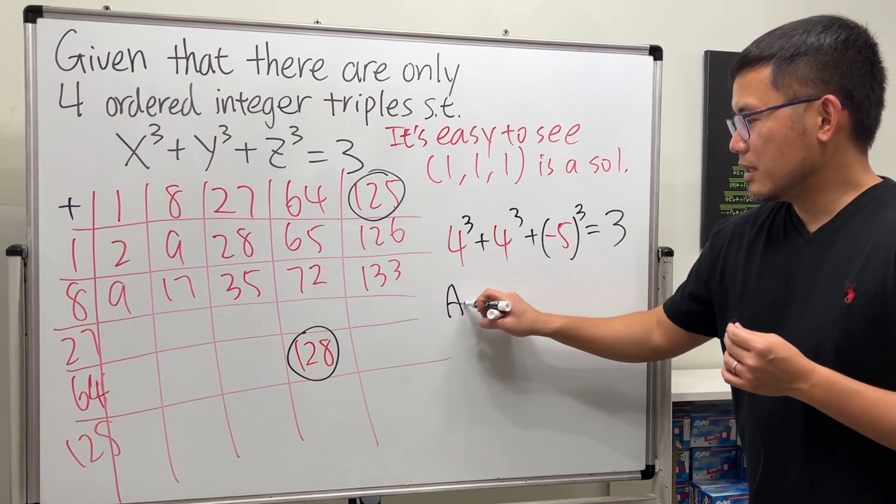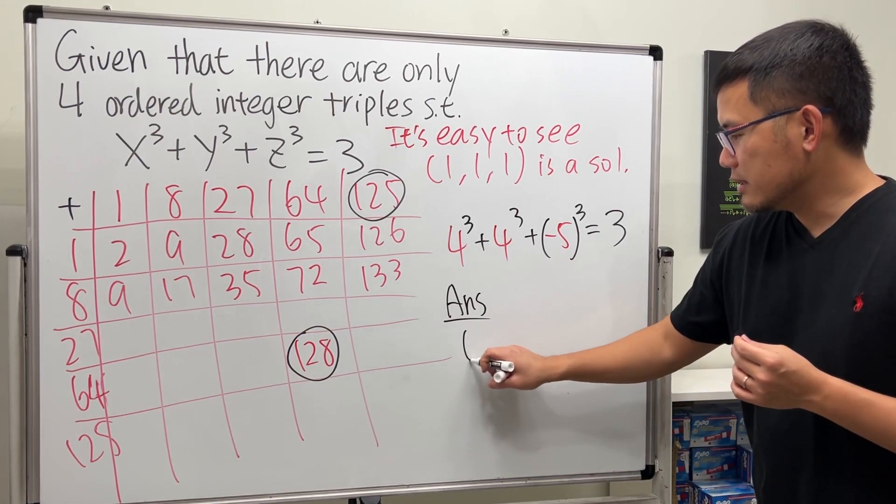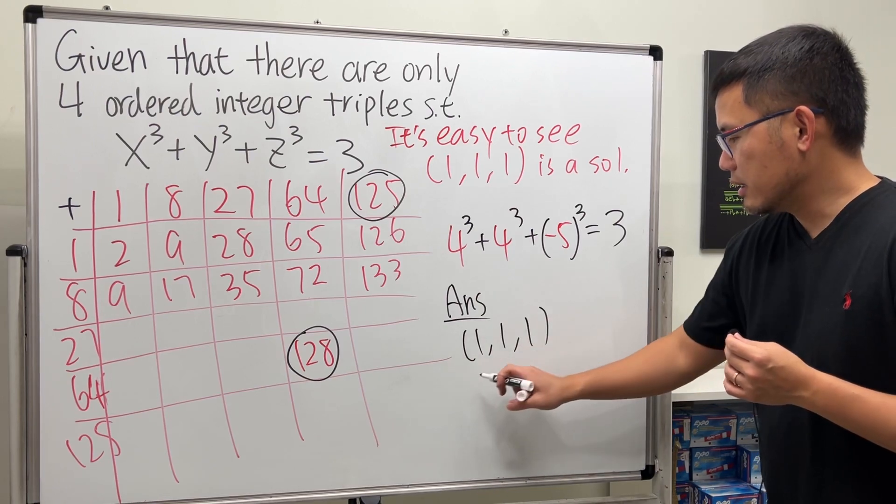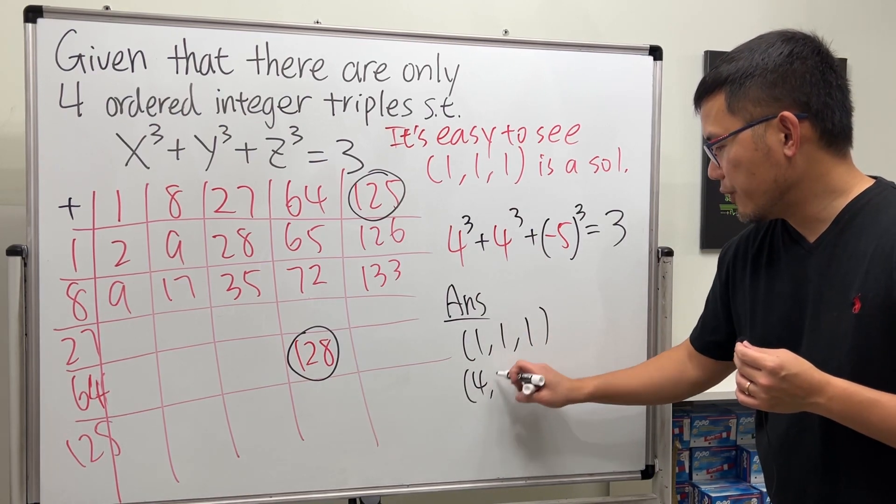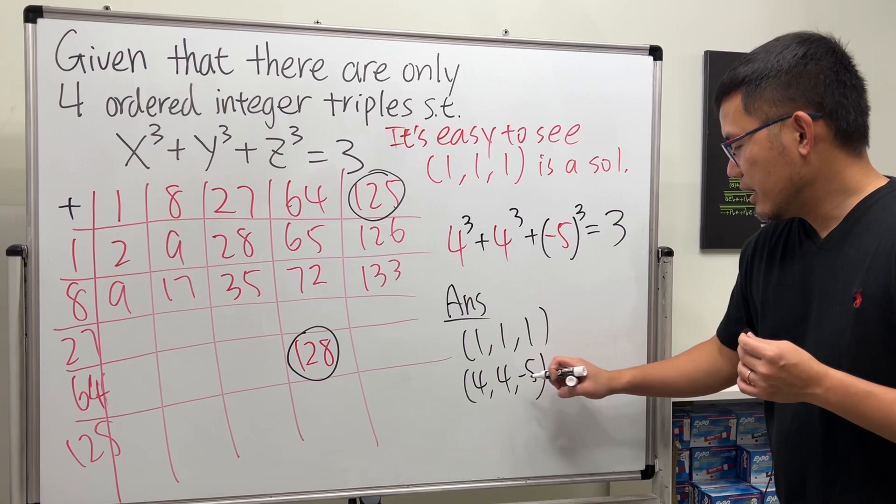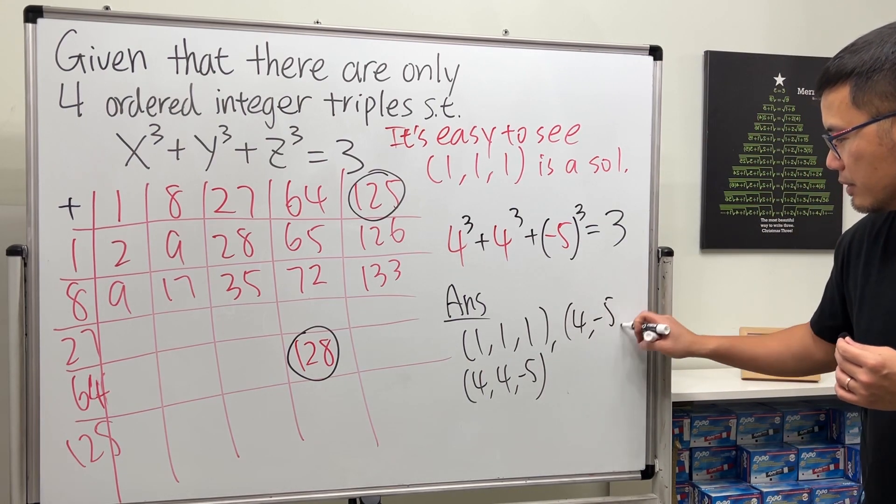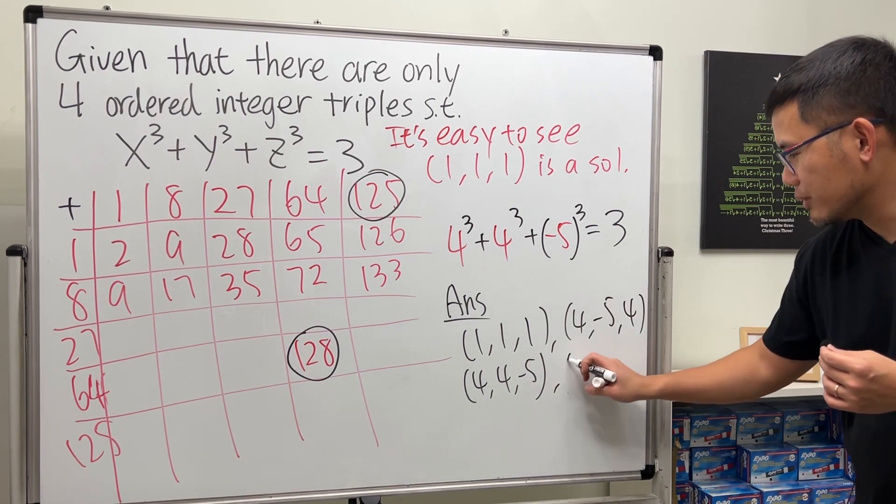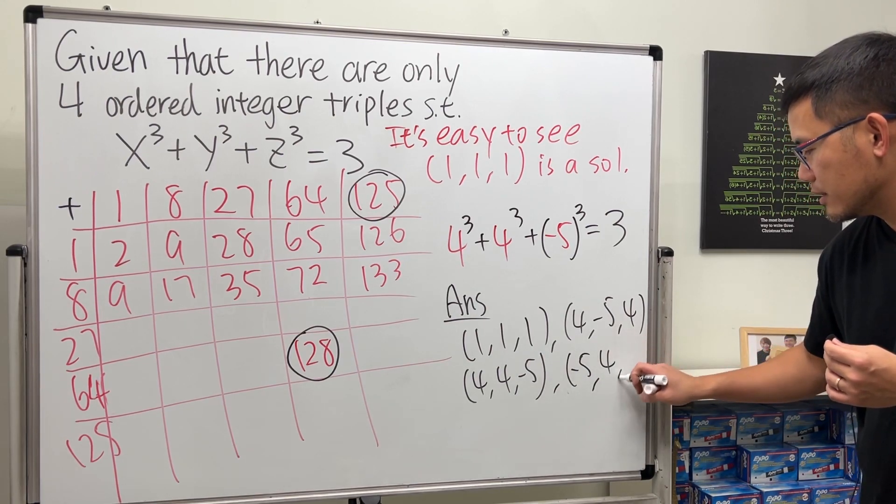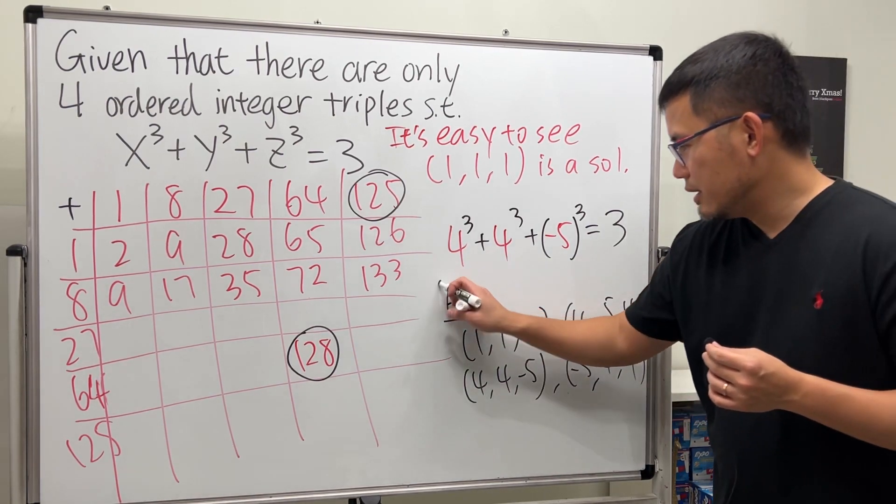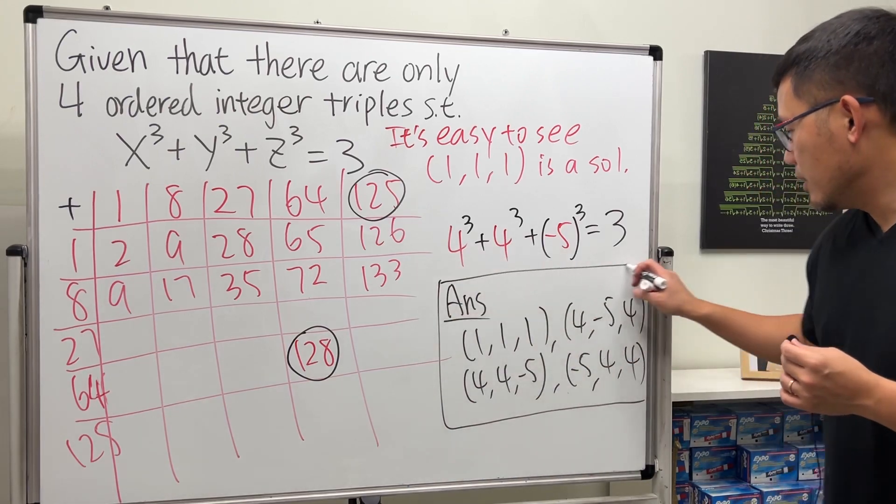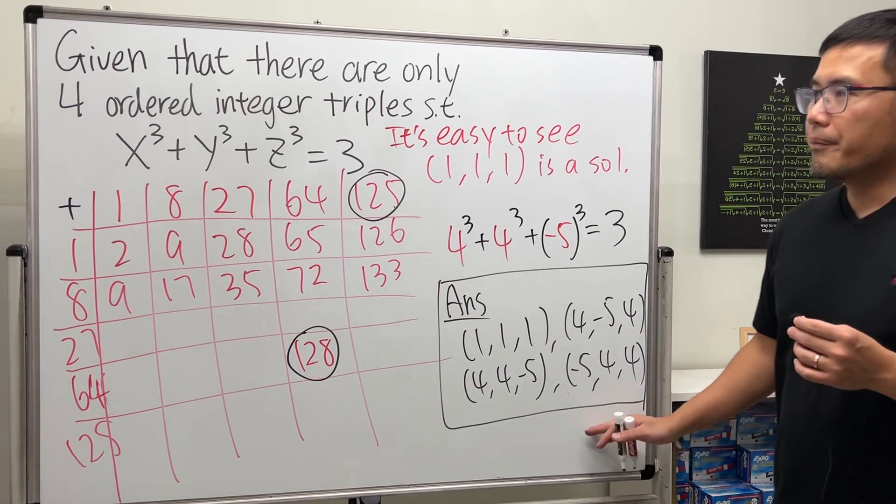The first answer is (1, 1, 1). The next one, let's put down (4, 4, -5). And then the third one is (4, -5, 4). And then the last one, let's put -5 first. So yeah, these are the only 4 possibilities.